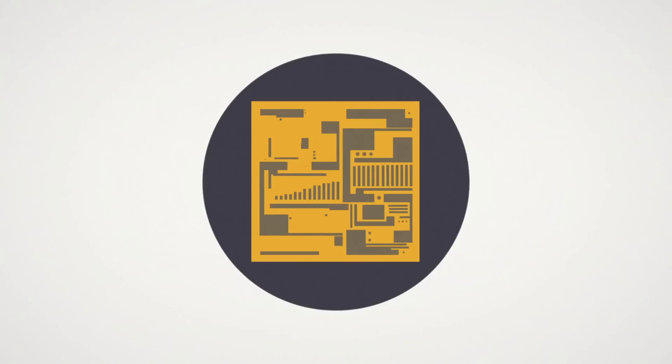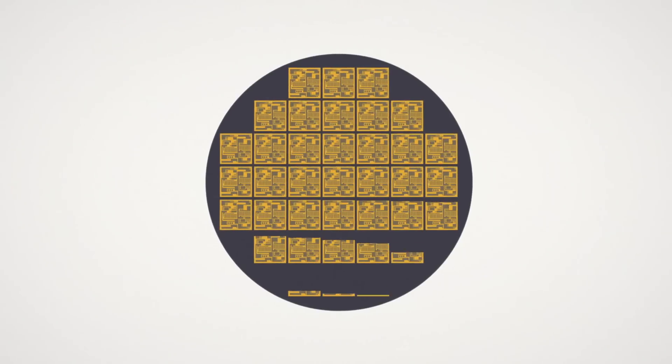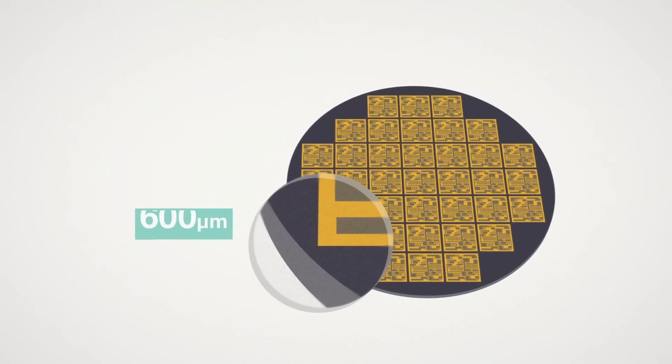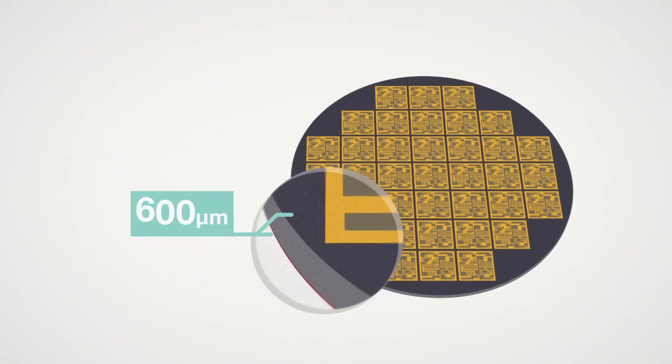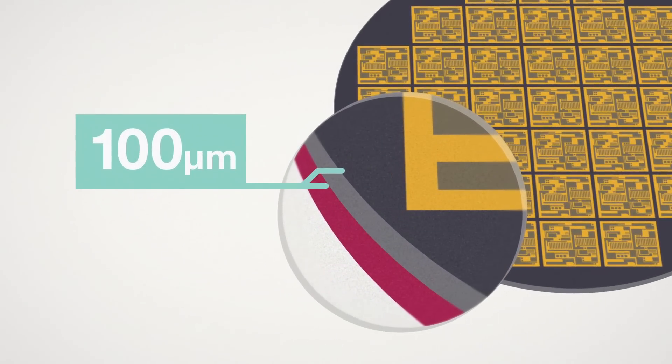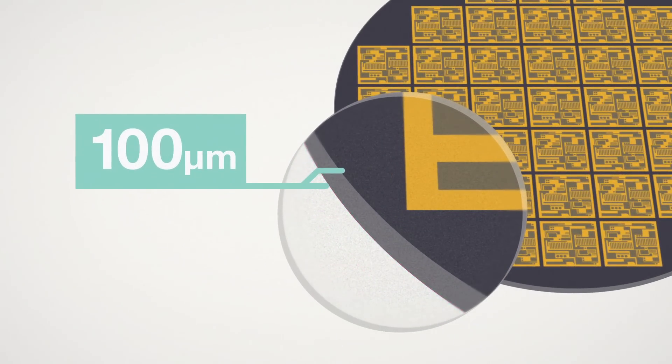Typical integrated circuits are produced on wafers made of silicon, gallium arsenide, or other semiconducting materials and are usually around 600 to 800 micrometers thick. At these thicknesses, the wafers do not require any special support during production. But when they are thinned to less than 100 micrometers, the wafers lose their rigidity and become extremely fragile.